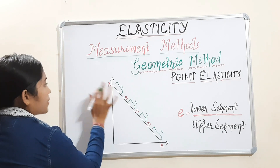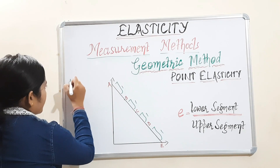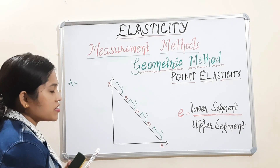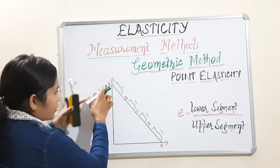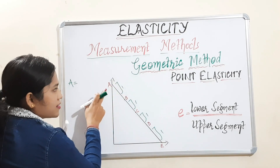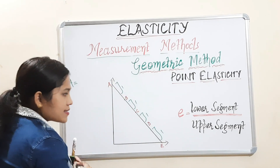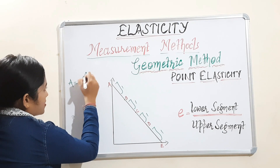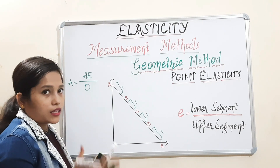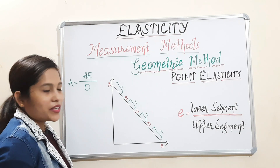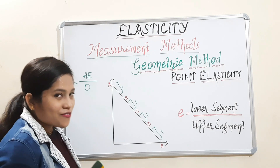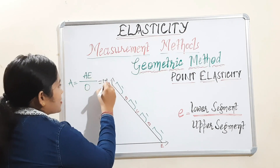First we will measure elasticity at point A, starting from the top. Elasticity at point A means lower segment divided by upper segment. At point A, the lower segment is AE. But the upper segment — there is no upper segment because it is the topmost point. So, AE divided by 0. Any number divided by 0 is infinity, so the value is infinity.